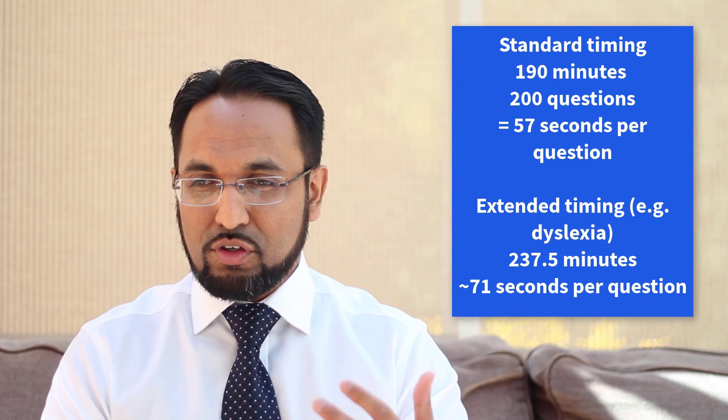It's really important that you keep to time. For standard timing, you've got 190 minutes to answer 200 questions — that gives you 57 seconds per question. At about 55 seconds, if you're not sure, it's better to just guess, flag it for review, and move on. This way you answer every question you can get marks for, pick up the easy marks for you, and hopefully build up a few minutes to go back to the ones you were unsure of.